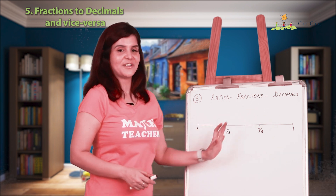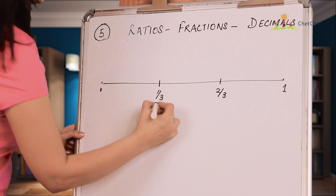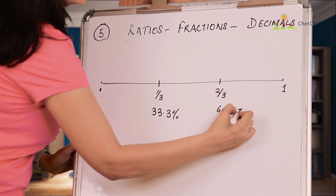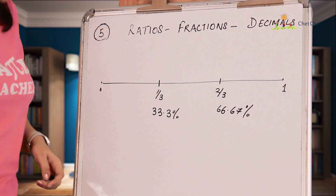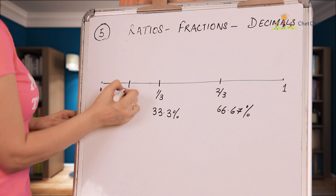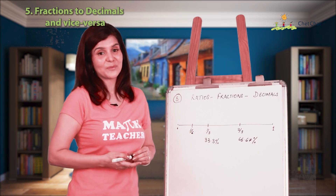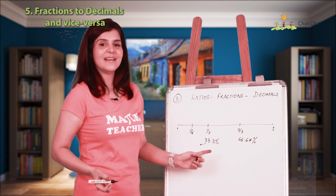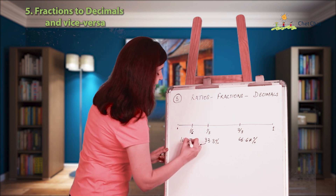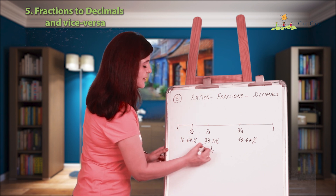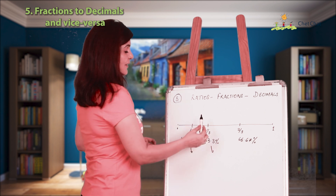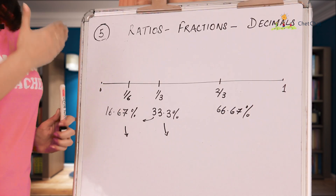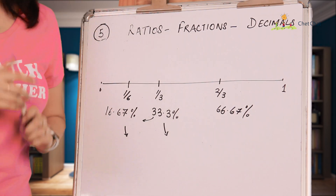With 0 to 1 divided into three sections, one third is 33.3% and two thirds is 66.67% — a recurring decimal. For one sixth, just halve one third: 16.67%. It's then easy to convert to decimals. Similarly, one twelfth is half of one sixth. The key idea: instead of dividing a big number by 12, just keep halving down the number line.